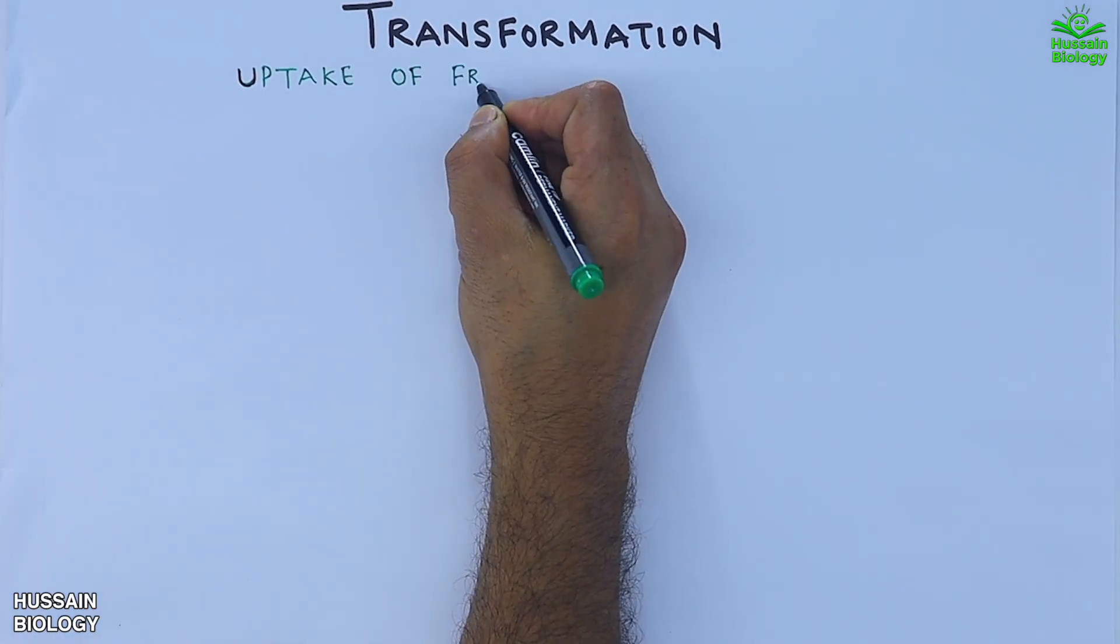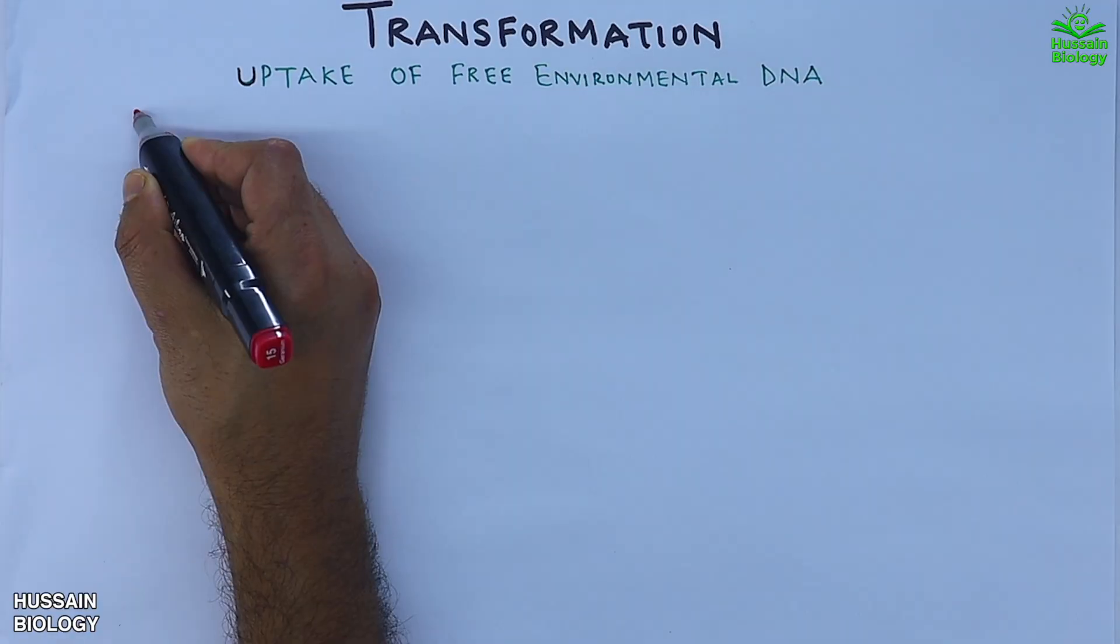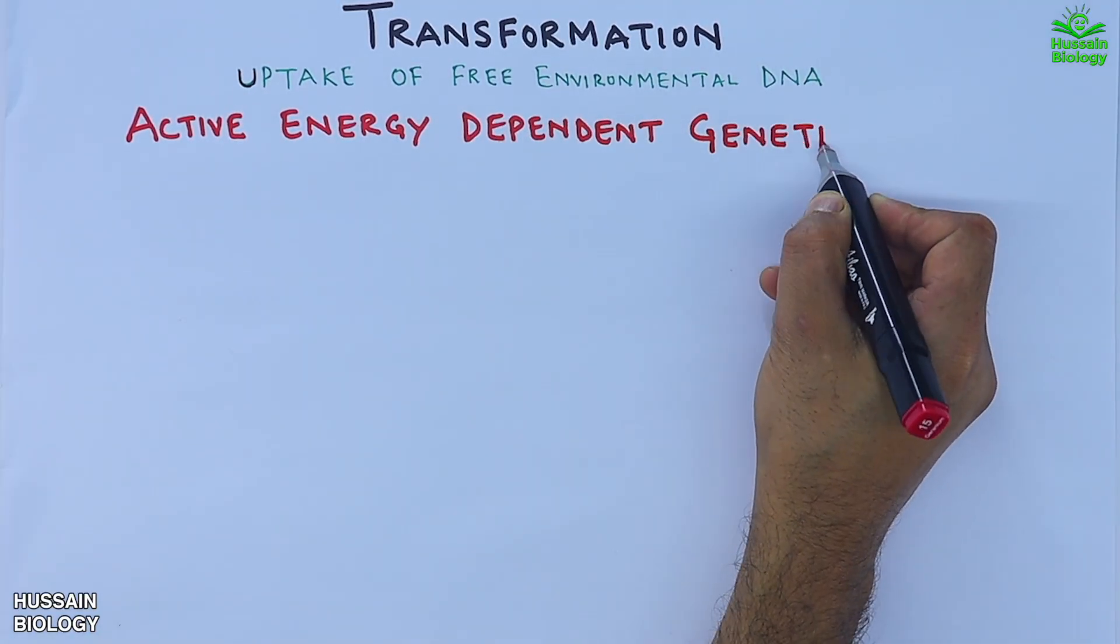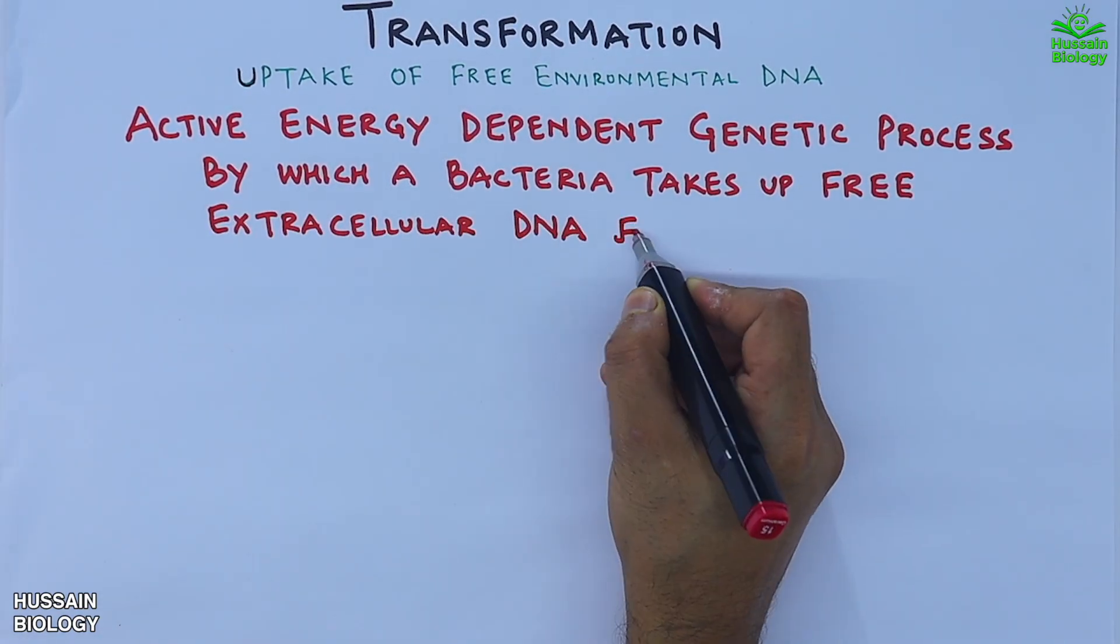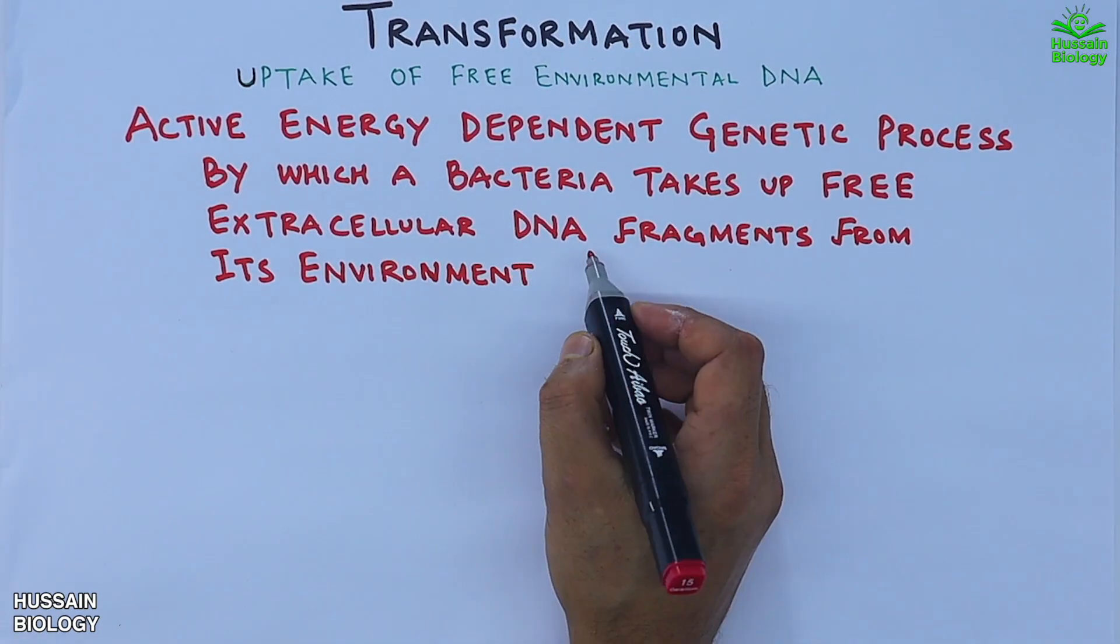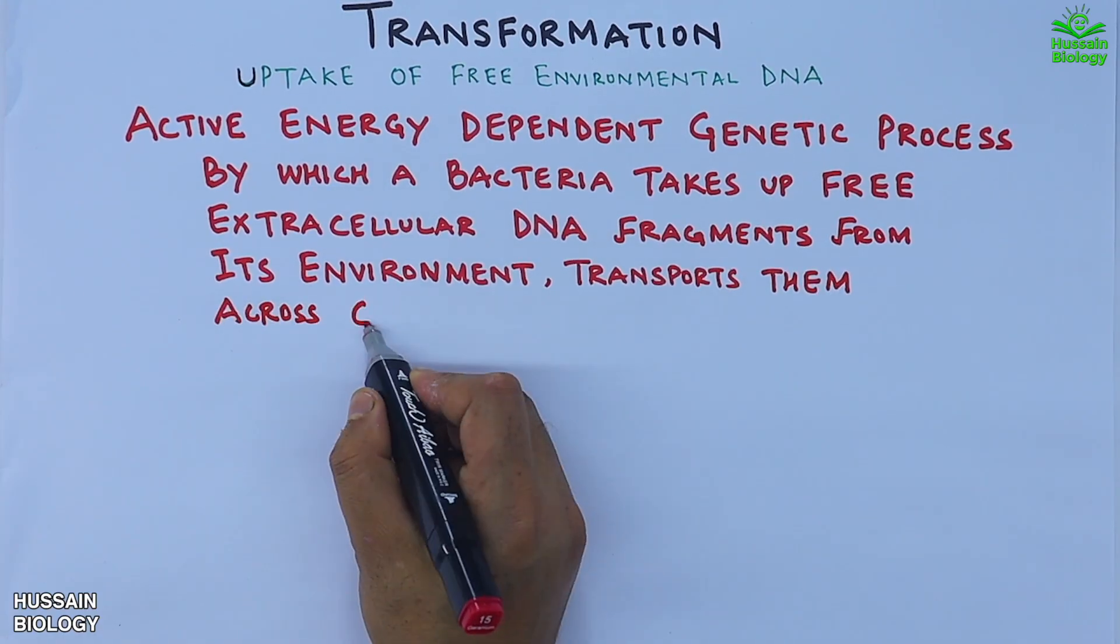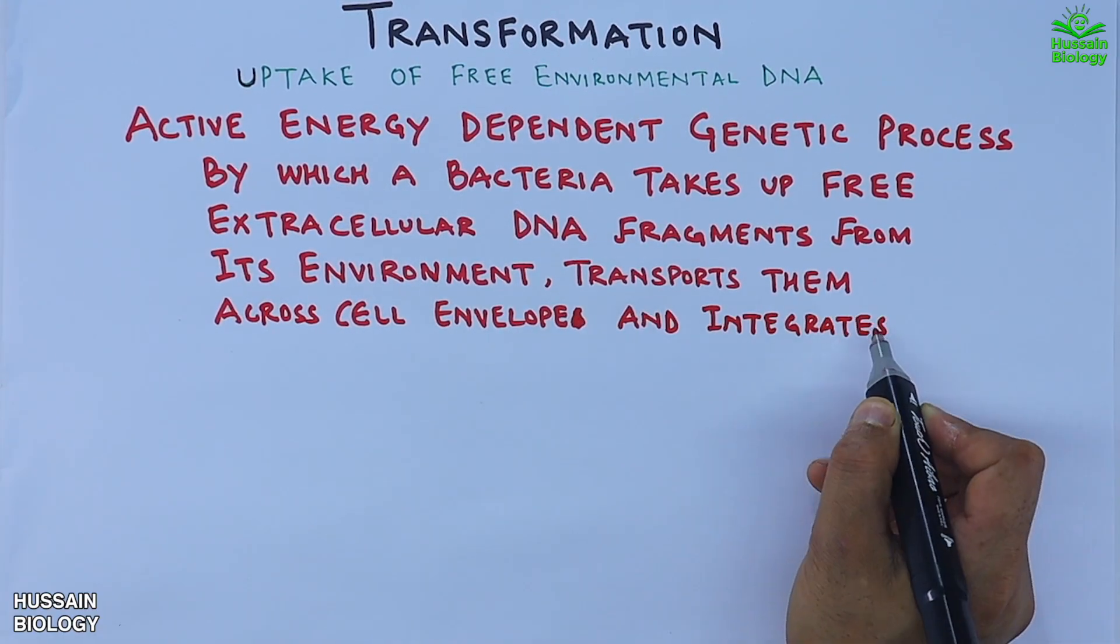Transformation is the uptake of free environmental DNA. We define it as an active, energy-dependent genetic process by which a bacteria takes up free extracellular DNA fragments from its environment, transports them across the cell envelope, and integrates them into its own genome via homologous recombination.